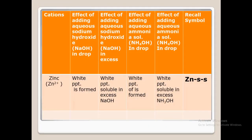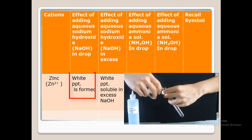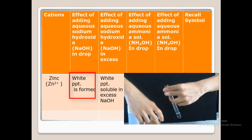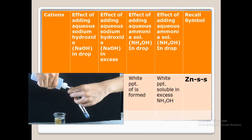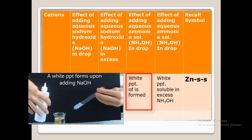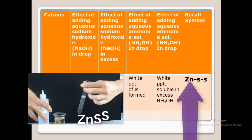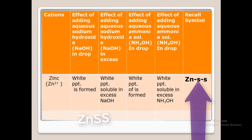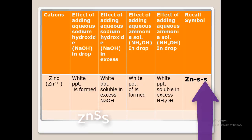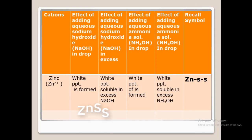The next test solution is zinc. When you add sodium hydroxide in drop, you get a white precipitate, and in excess the white precipitate becomes soluble in excess sodium hydroxide. When you use ammonia solution, you also get a white precipitate, and this time the white precipitate is soluble in excess ammonia solution too. The memory recall is ZNSS: ZN stands for zinc, the first S is soluble in excess sodium hydroxide, and the second S is soluble in excess ammonia solution.